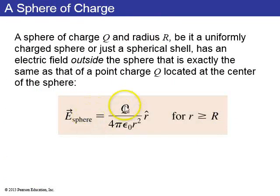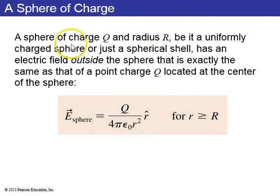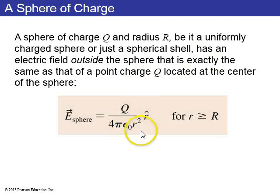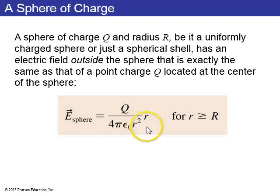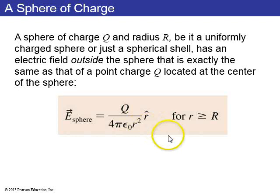A sphere of charge Q and radius R — whether a uniformly charged solid sphere or just a spherical shell — has exactly the same electric field outside as a point charge located at its center: E equals Q over 4 pi epsilon naught r squared, identical to the point charge formula.